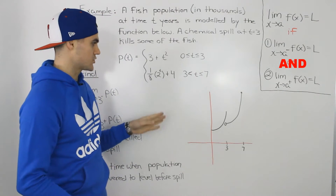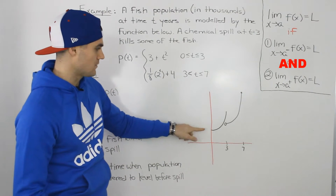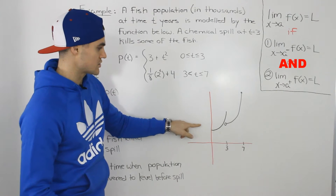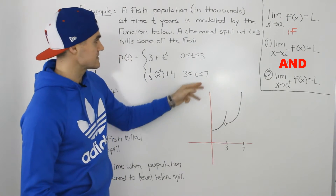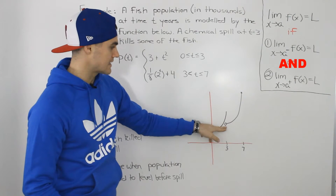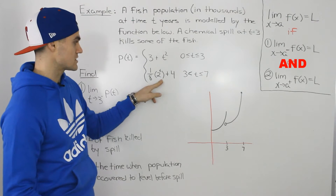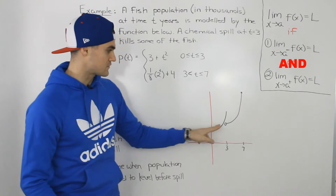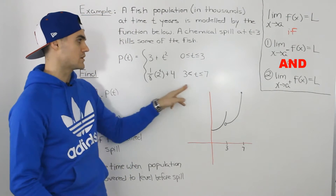If we take this piecewise function and graph it, we get the following. Starting at time zero, the fish population grows according to 3 plus t squared — a parabola opening up — growing all the way to time three, when the chemical spill occurs. After the spill, a portion of the population is killed, and then for t greater than 3 the population is modeled by the exponential function one-eighth times 2 to the power of t plus 4, defined up to time seven.